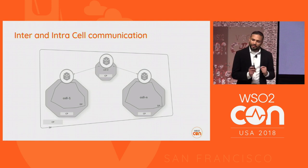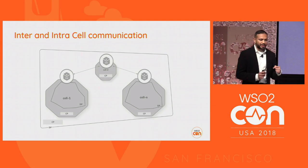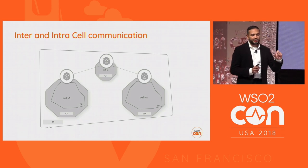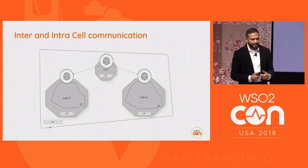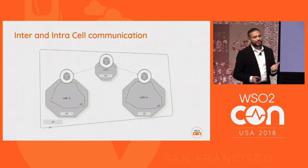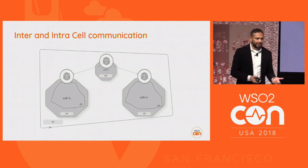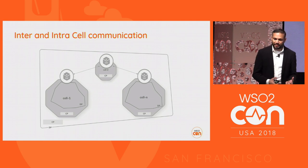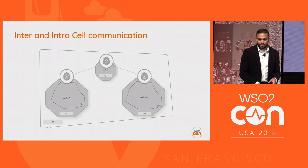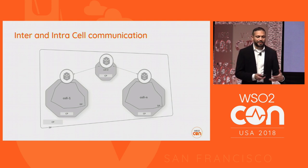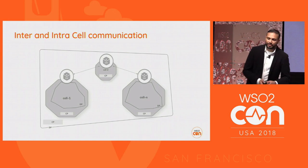There are two levels of communication: intracell communication and intercell communication. For intracell, there's a control plane and a data plane inside the cell. To communicate between cells, there's a control plane and data plane outside the cell as well. This concept clearly maps to service mesh. And at a high level, you can map a cell to a Kubernetes namespace and deploy it in your infrastructure.